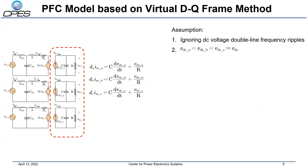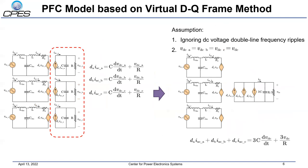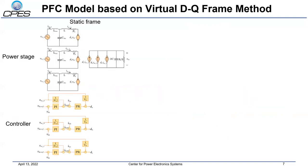Similarly, the third harmonics on the AC side are also ignored. The DC buses of the three circuits can be combined into one DC bus based on this assumption. And since the quantities of each phase circuit are simply shifted by 120 degrees from one phase to the other, the single-phase circuit is bounded-input bounded-output stable if and only if this artificial three-phase circuit is bounded-input bounded-output stable. The Park transform is then applied to both the power stage circuit and the controllers of the artificial three-phase system to obtain the whole system model in the DQ frame.